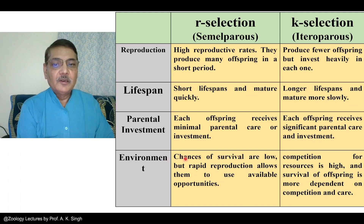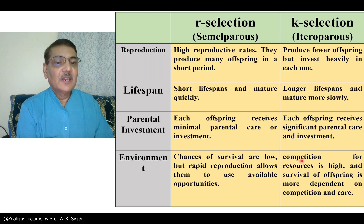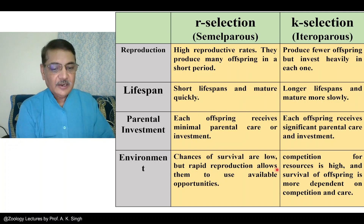Regarding the environment, in the case of R selection, chances of survival are very low, but rapid reproduction allows them to use available opportunities. Whereas in the case of K selection, competition for resources is very high and survival of offspring is more dependent on competition and care.